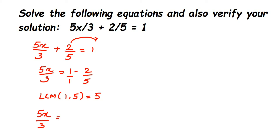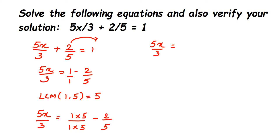So 5x upon 3 will remain the same. For 1 upon 1, we need to find the equivalent fraction with denominator 5. There are two ways: multiplication or division. Since 5 is greater than 1, we multiply — multiply both numerator and denominator by 5 to get 5 upon 5. The second number, 2 by 5, already has denominator 5 so we don't change it. So we get 5x upon 3 equals 5 upon 5 minus 2 upon 5.